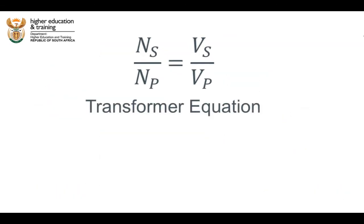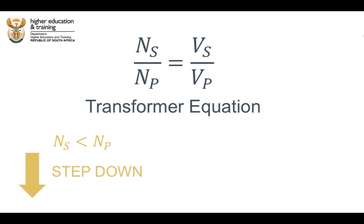We call this equation the transformer equation. It allows us to work out exactly how a transformer will transform any given voltage. It also tells us that if there are fewer turns in the secondary coil than in the primary coil, the transformer will reduce or step down the voltage. And if there are more turns in the secondary coil than in the primary coil, the transformer will increase or step up the voltage.